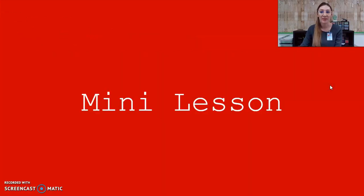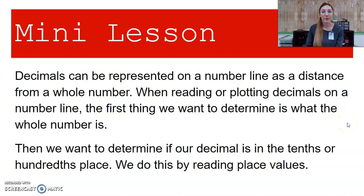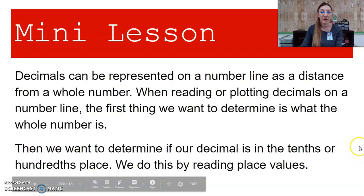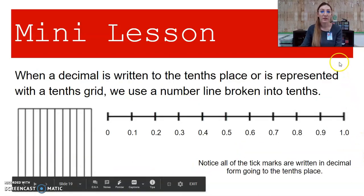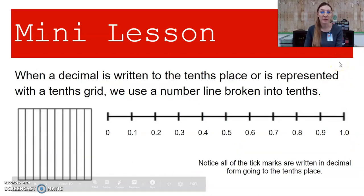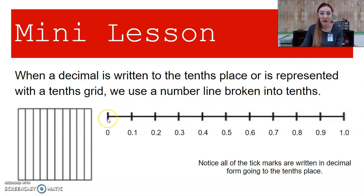Alright, let's get started on our mini lesson. Decimals can be represented on a number line as a distance from a whole number. When reading or plotting decimals on a number line, the first thing we want to determine is where the whole number is. Then we want to determine if our decimal is in the tenths or hundredths place — we do this by reading place values. When a decimal is written to the tenths place or represented with a tenths grid, we use a number line broken into tenths. All the tick marks are written in decimal form going to the tenths place.